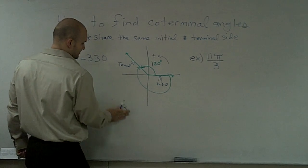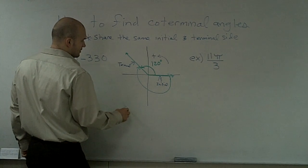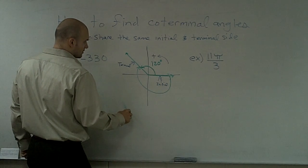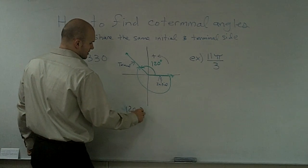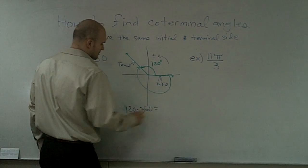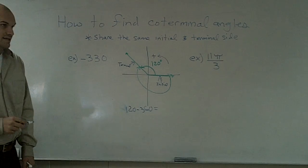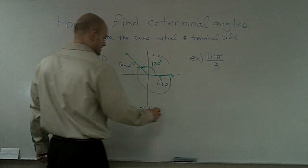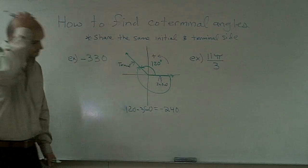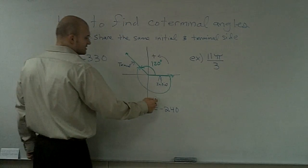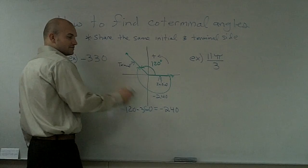360, sorry. 120 minus 360 is you're going to get a negative 240. So therefore, that means my coterminal angle will be negative 240 going in this direction.